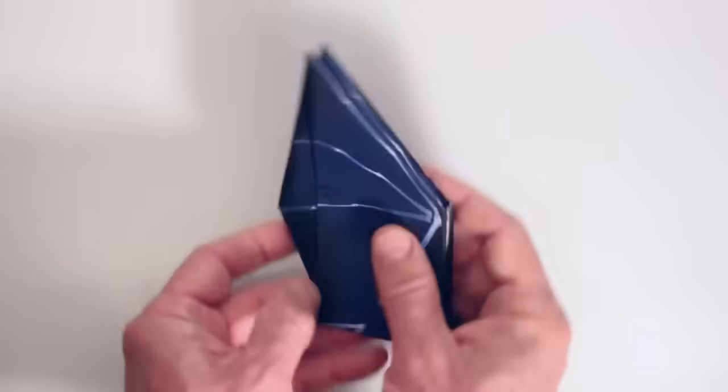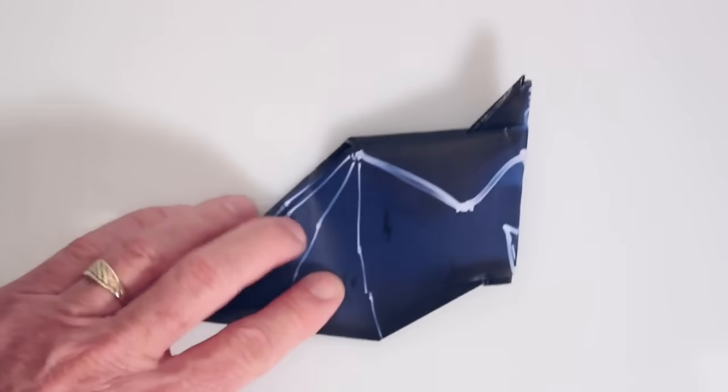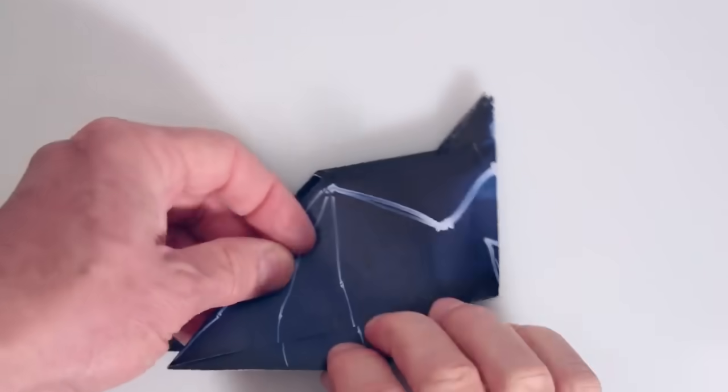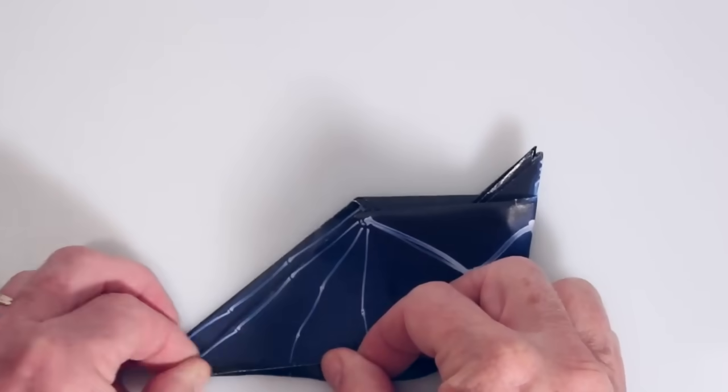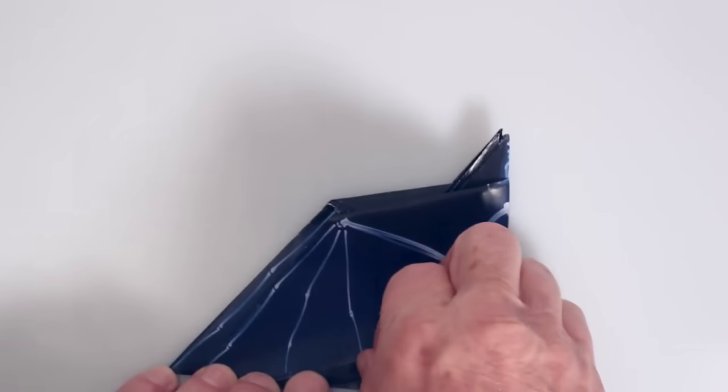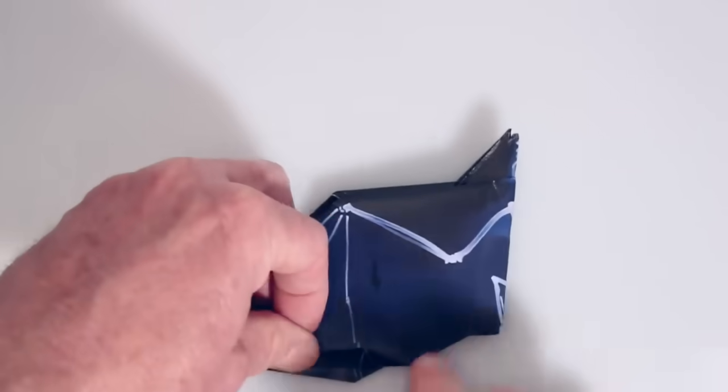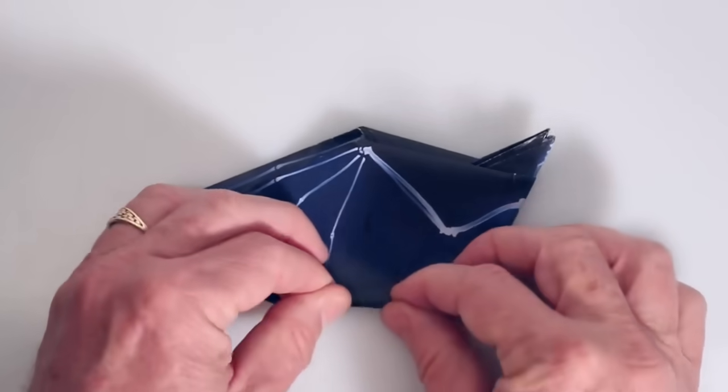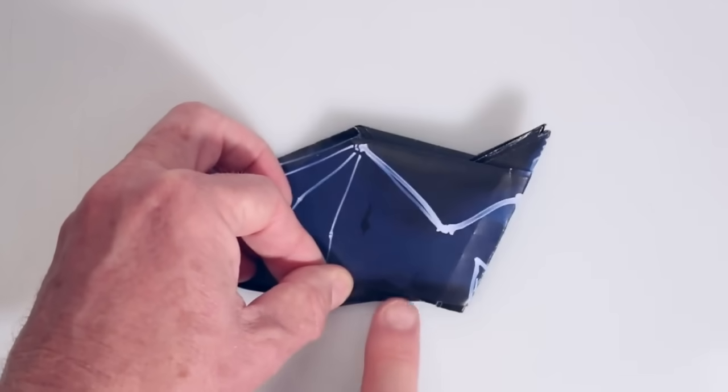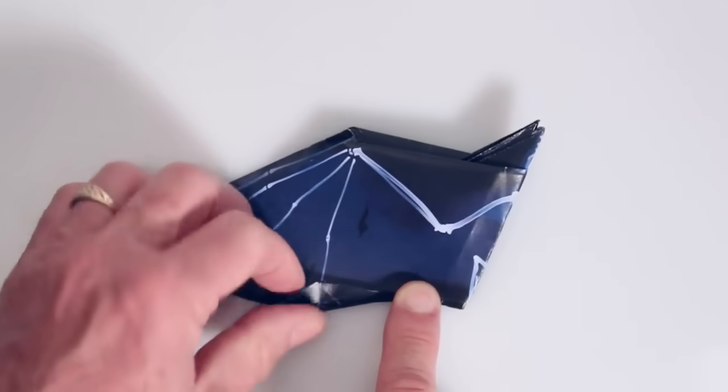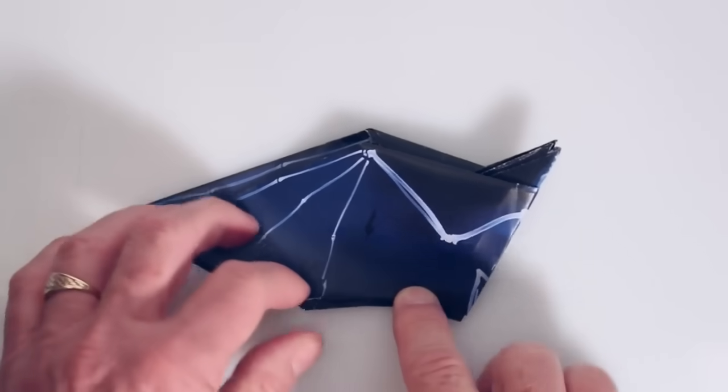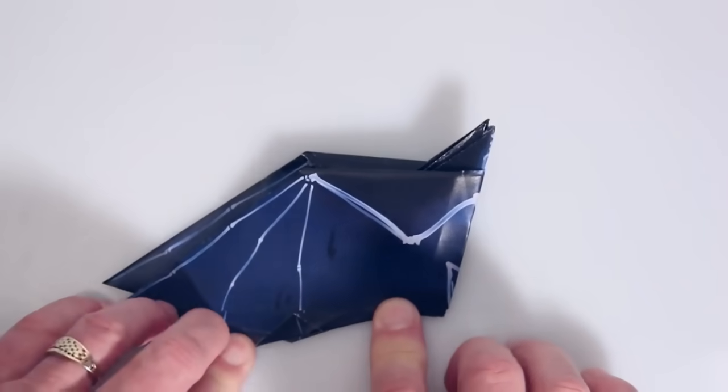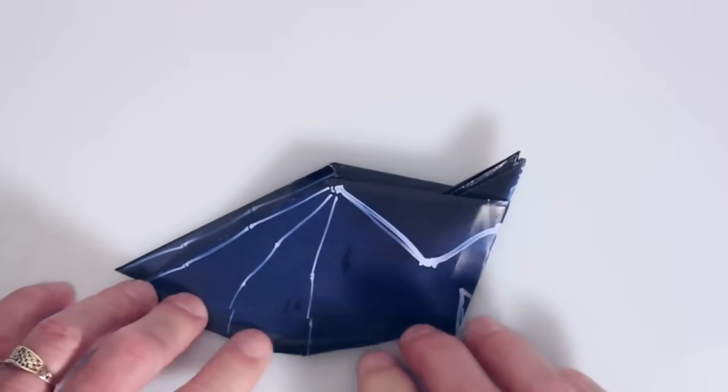We'll flip it over and do the same thing to the other side. We've got this long edge. We're going to bring up to this guy right here. Unfold. And then we're going to do the same thing to the short edge. We're going to go over to that layer. Let's just back that up. There we go. Unfold.